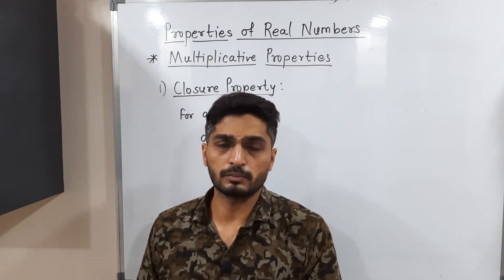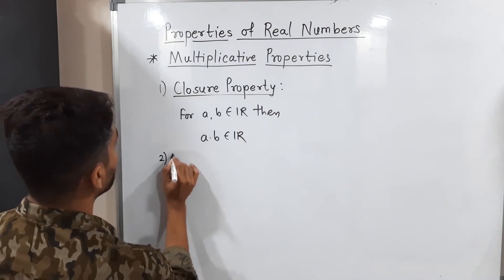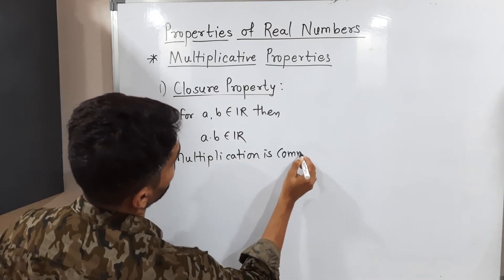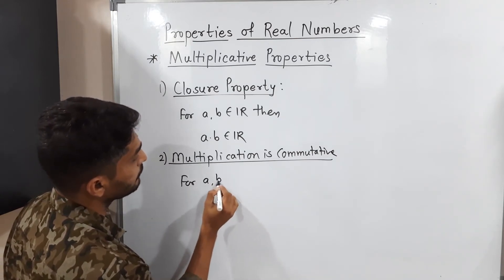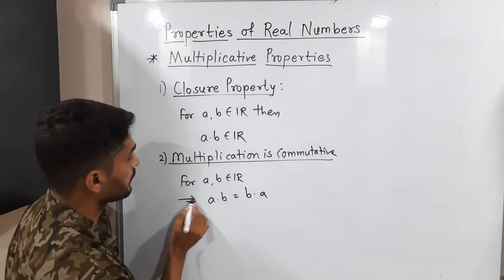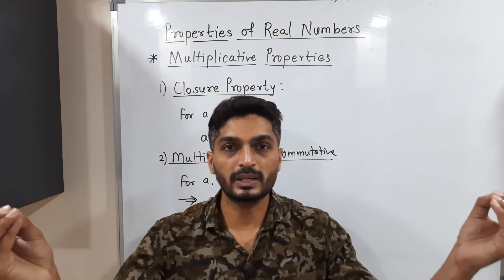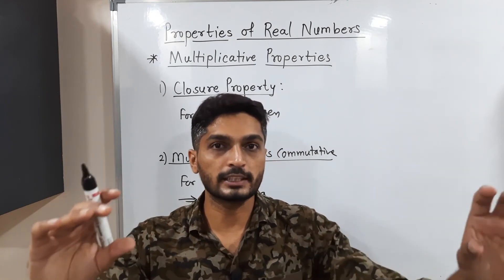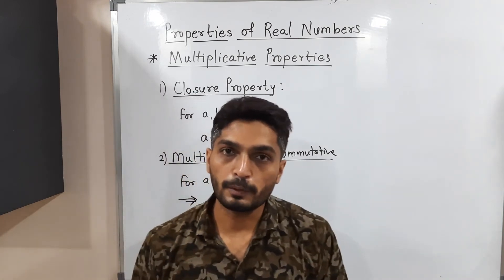The second multiplicative property is commutative property — multiplication is commutative. For any two real numbers a, b belonging to R, a into b equals b into a. So 2 into 3 is the same as 3 into 2. The order of multiplication doesn't matter; you will get the same product either way.